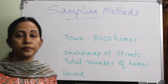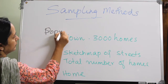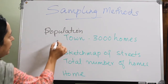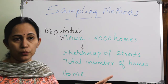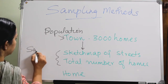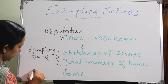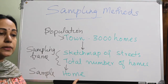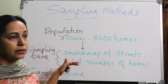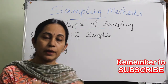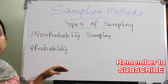For example, a town with 3,000 homes constitutes the universe or the study population. From this, we get a sketch map of all the streets with an updated total number of homes — this will be the sampling frame. From that, we have to take each home as the sample. From the sampling frame, we take the basic sampling unit, and there are two main methods: non-probability sampling and probability sampling.